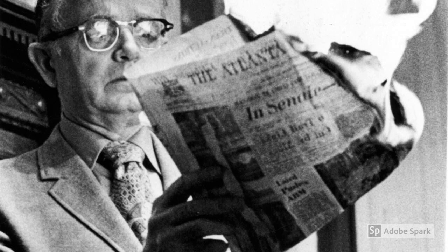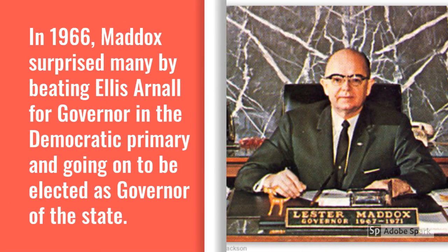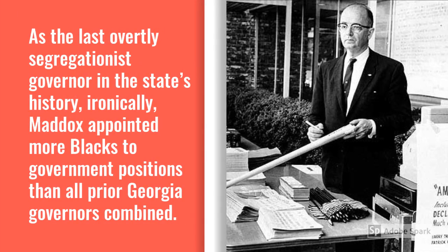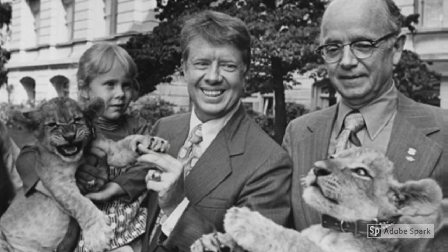Maddox's initial entry into politics was met with defeat. In the late 1950s and early 1960s, he ran two unsuccessful campaigns for mayor of Atlanta, losing to William B. Hartsfield and Ivan Allen Jr. He also ran for lieutenant governor in 1962, losing to another segregationist candidate in the Democratic primary. However, in 1966, Maddox surprised many by beating Ellis Arnall for governor in the Democratic primary and then going on to be elected as governor of the state. As the last overtly segregationist governor in the state's history, it is ironic that Maddox appointed more Blacks to government positions than all prior Georgia governors combined. He also received support of both whites and Blacks alike due to his 'little people days,' in which twice a month average people could stand in line to meet with the governor. Nonetheless, Maddox was criticized for not allowing flags in state buildings to be flown at half-mast after the death of Martin Luther King Jr. and for his fight against the civil rights platform of the Democratic Party at the 1968 National Convention.